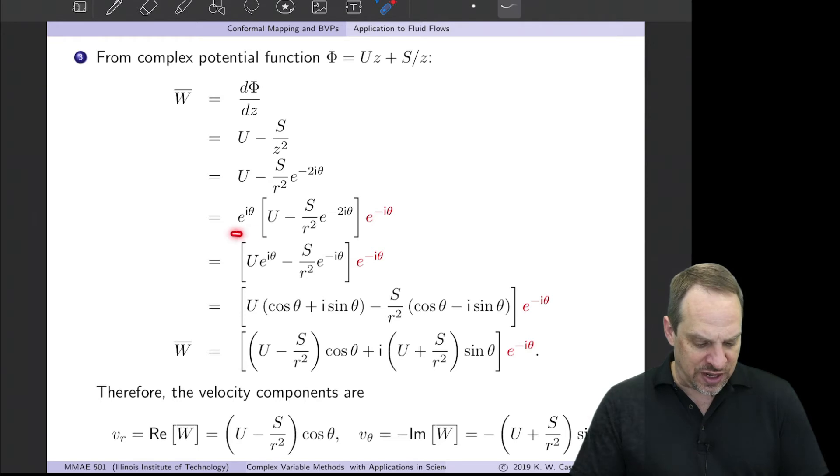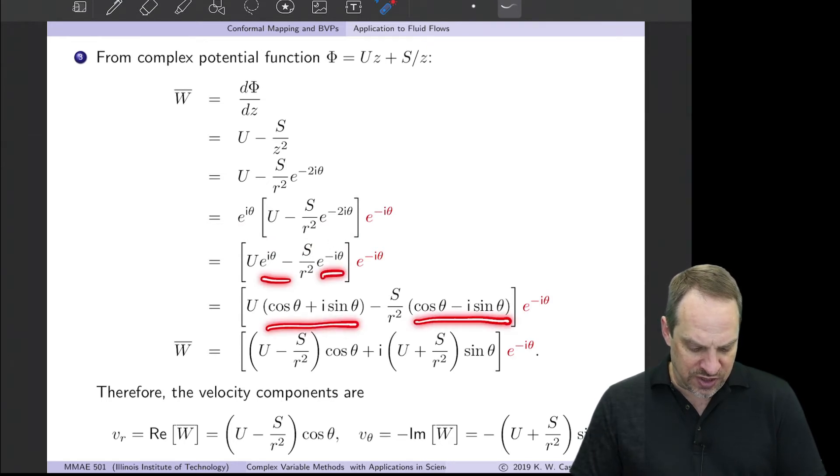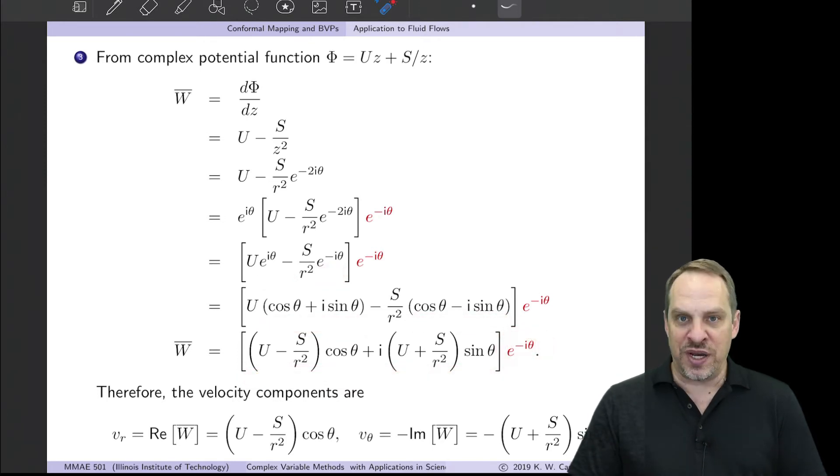Use the Euler formula as before, and then collect the real and imaginary parts, and then neglecting the e^(-iθ).